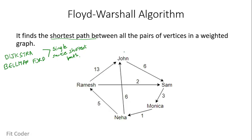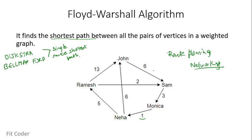Let's take an example. We have five friends: John, Sam, Monica, Neha, and Ramesh. The edges between them can be thought of as the distance between each other's houses. If you have to find the shortest path from Monica to Neha, or from Monica to John, Floyd-Warshall will be very handy — no matter which house you are in, it will tell you the shortest path to the other house. This algorithm is useful for route planning or networking, such as finding the most optimized path to pick up all five friends.